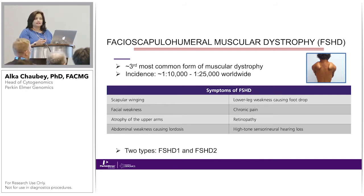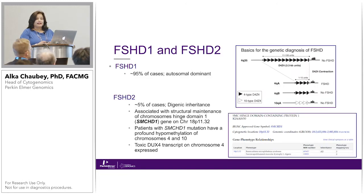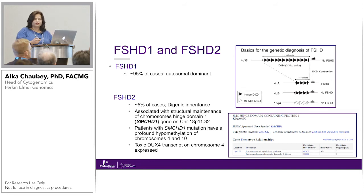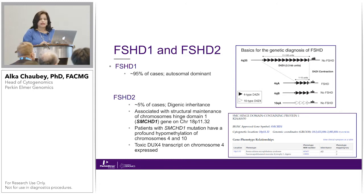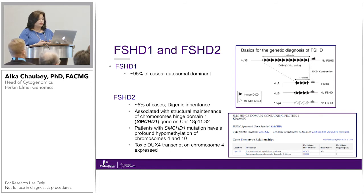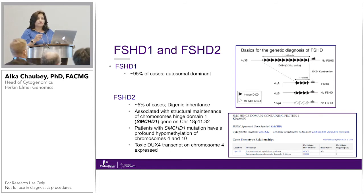This disorder has two types: FSHD1 and FSHD2. FSHD1 accounts for 95% of cases and has autosomal dominant inheritance. FSHD2 is only seen in 5% of cases, and its mode of inheritance is digenic inheritance.